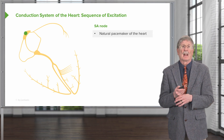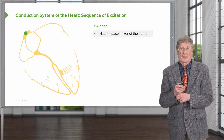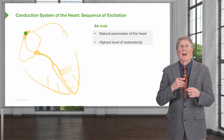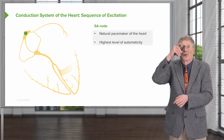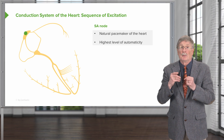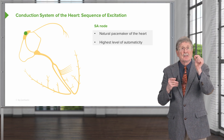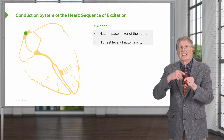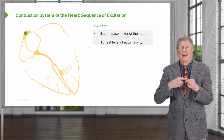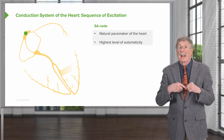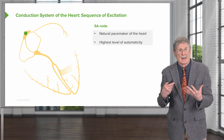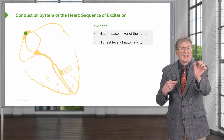The sinoatrial node is the natural pacemaker of the heart. Here in yellow is the conduction system, and green highlights where the sinoatrial node lives. It has the highest level of automaticity, meaning that it depolarizes faster, reaching threshold better than any other tissue or cell type within the heart, so it's going to be in control. The sinoatrial node is also receiving a lot of input that affects its natural depolarization tendency — neural input and hormonal input. We can slow the heart rate down with the vagus nerve and speed it up with catecholamines like adrenaline.